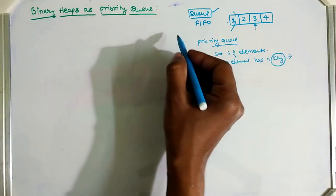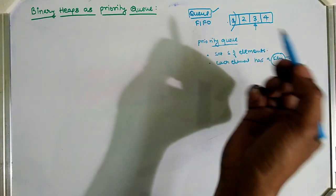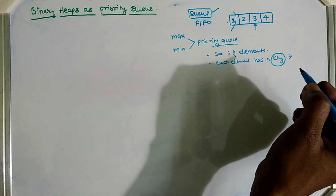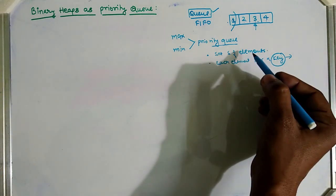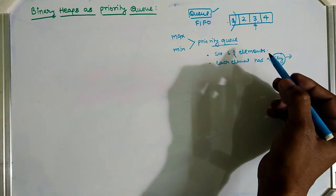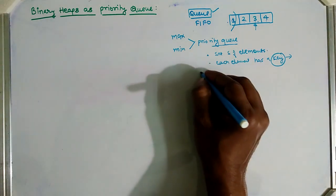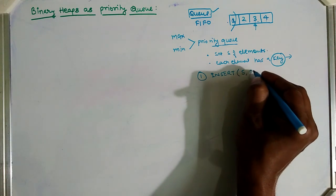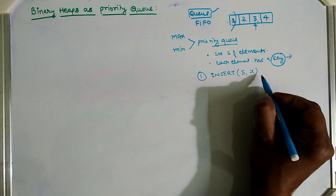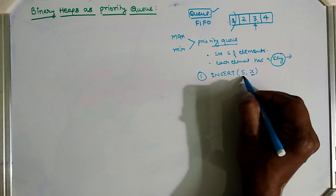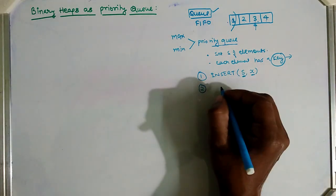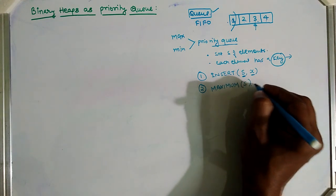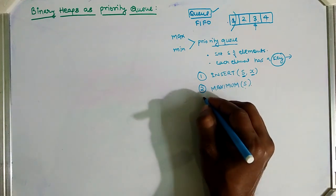Binary heaps can implement two types of priority queues: max priority queue and min priority queue. If we consider the max priority queue, it supports the following operations. First is Insert — it inserts element x into the set S. Second is Maximum — it returns the element in S with the largest key value.